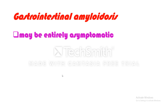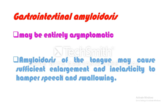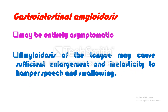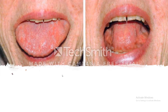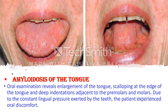Gastrointestinal amyloidosis may be entirely asymptomatic. However, amyloidosis of the GI tract may affect the tongue and cause sufficient enlargement — macroglossia — and inelasticity of the tongue, which hampers speech and swallowing and causes mouth discomfort. This is a case of amyloidosis of the tongue: the tongue is enlarged with scalloping at the edges and notching — deep indentations caused by pressure of the molars and pre-molars due to tongue enlargement — and the patient experienced oral discomfort.